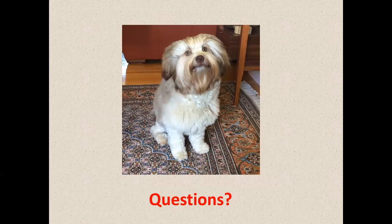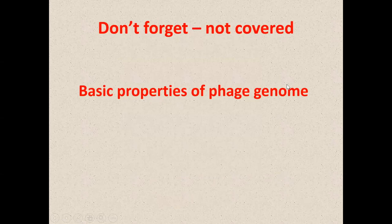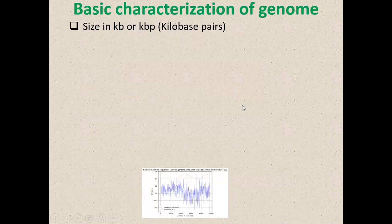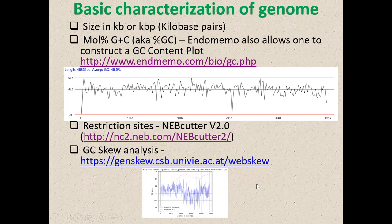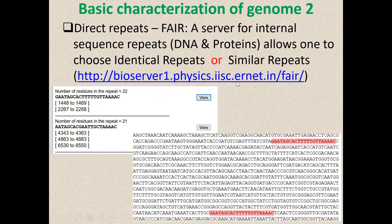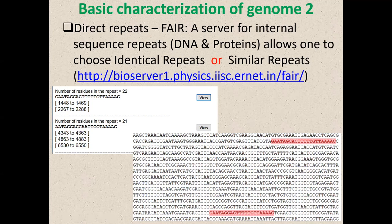That's the point where we'll end for questions. I should mention that there are basic properties of phage genomes you should record: obviously the size, the GC content — it's worth doing a GC plot because you may see regions with really low GC — restriction sites, skew analysis, and direct repeats. The problem with repeats is that you have to explain what they are. I'll end there and answer any questions.